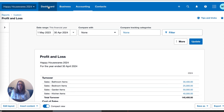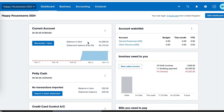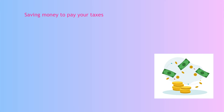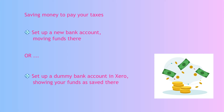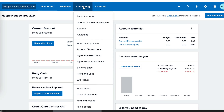We now know that our corporation tax due is £14,800. If we go to our dashboard, we can see that we do have money in our bank account available to pay that. But how do we set it aside? Often there's a suggestion that you set up a new bank account and move the funds, but maybe that's not that easy to do. So this is what I would do instead if you don't have another bank account — I would create a dummy bank account in Xero.